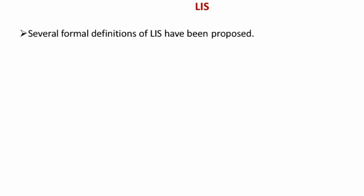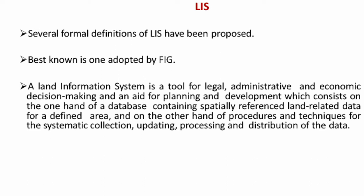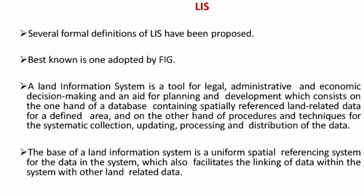LIS is a manual or computer-based information system used to store, retrieve, display, and plot spatial and textural data relating primarily to land features and characteristics. Several formal definitions have been proposed by different organizations. The best one is given by the International Federation of Surveyors (FIG): a land information system is a tool for legal, administrative, and economic decision-making, and an aid for planning and development, consisting of a land database, spatially referenced land-related data, and procedures for collecting, updating, processing, and distributing that data.